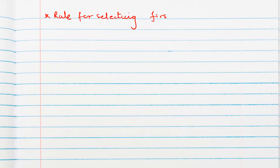Now we will discuss the rule for selecting the first function and the second function — that is the LIATE rule.